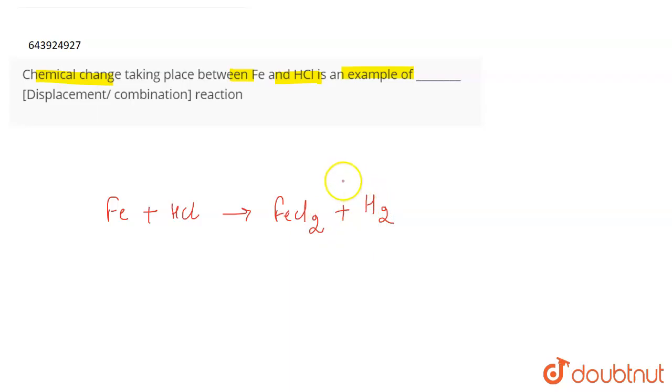Now what does this mean? This means that iron, being more reactive than hydrogen, has displaced it from its chloride and has led to the formation of a ferrous chloride salt, FeCl2, along with the liberation of hydrogen gas.